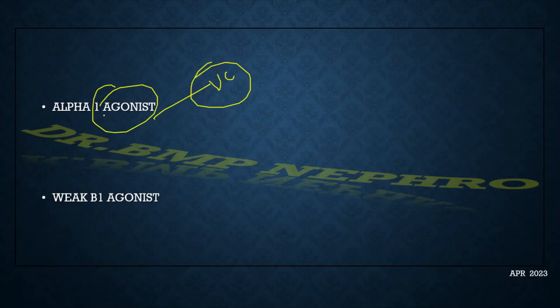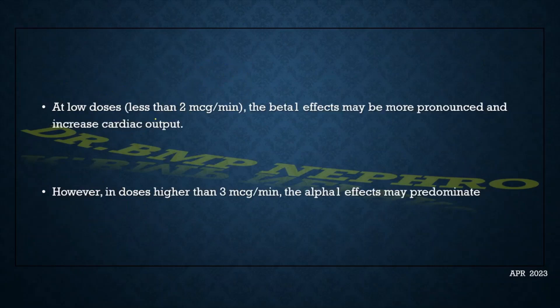Mainly acts on the alpha-1 receptor which is an agonist. It has a very weak action on beta-1 receptors also, but most of the action during shock comes from the alpha-1 receptor agonism. At low dose only it has beta effects. Most of the time in clinical situation we use a dose higher than 3 mcg per minute, so alpha receptor mediated vasoconstriction predominates and that's how it is a vasopressor.